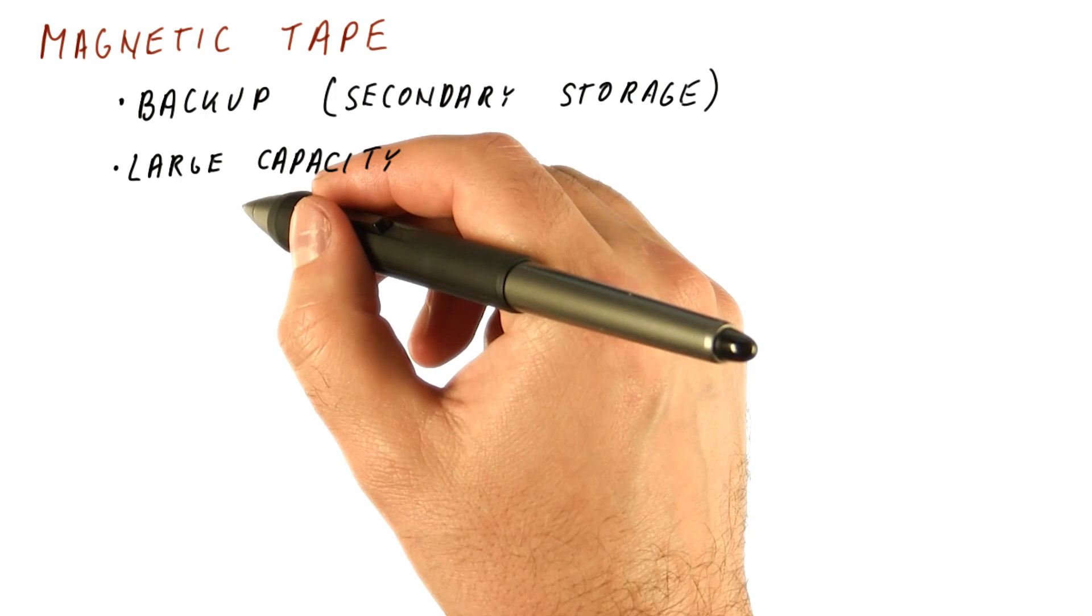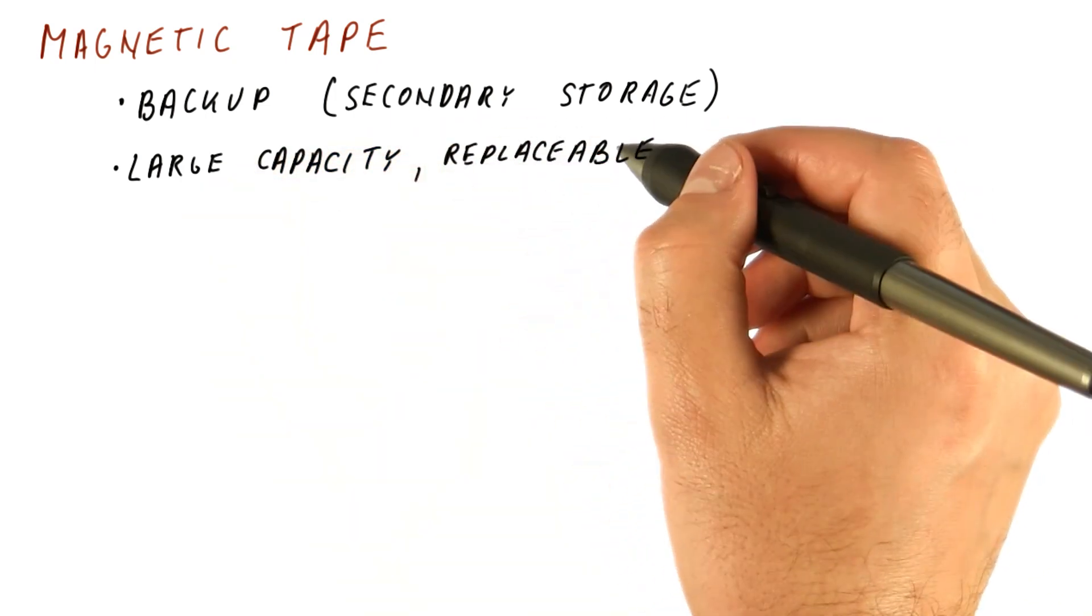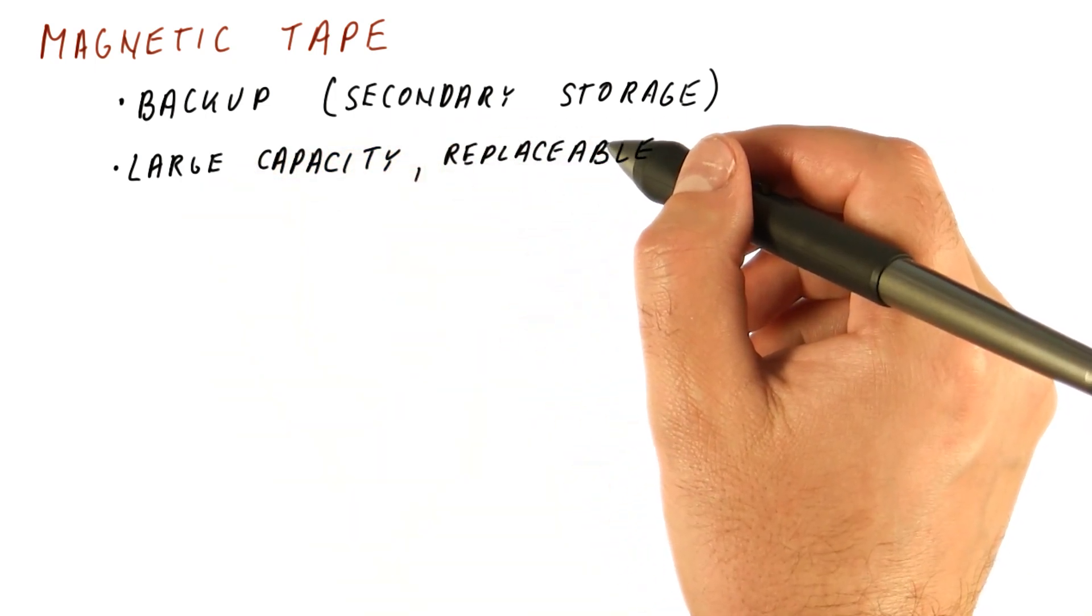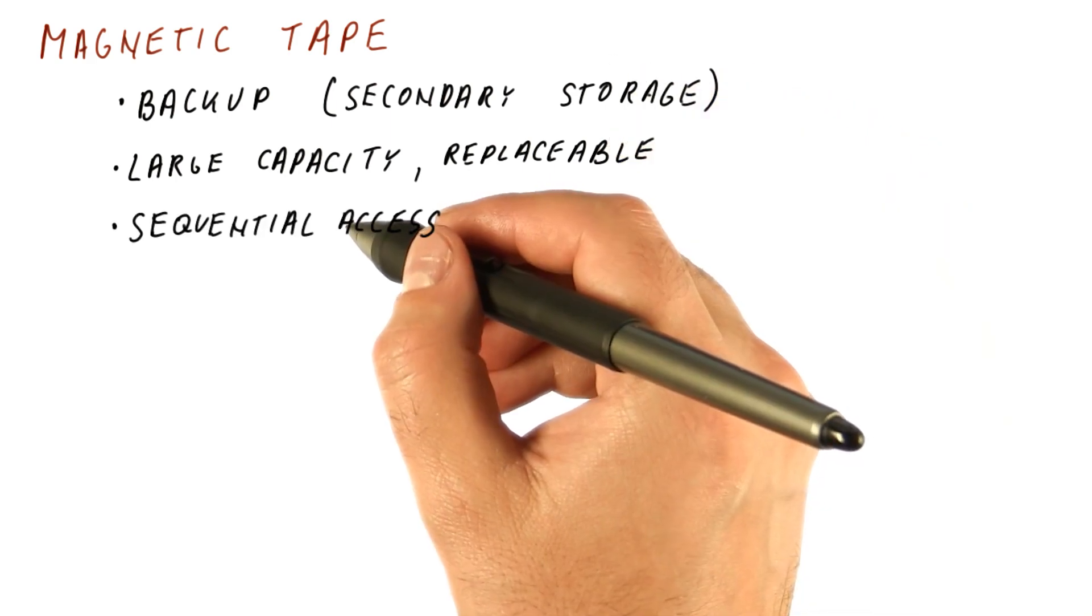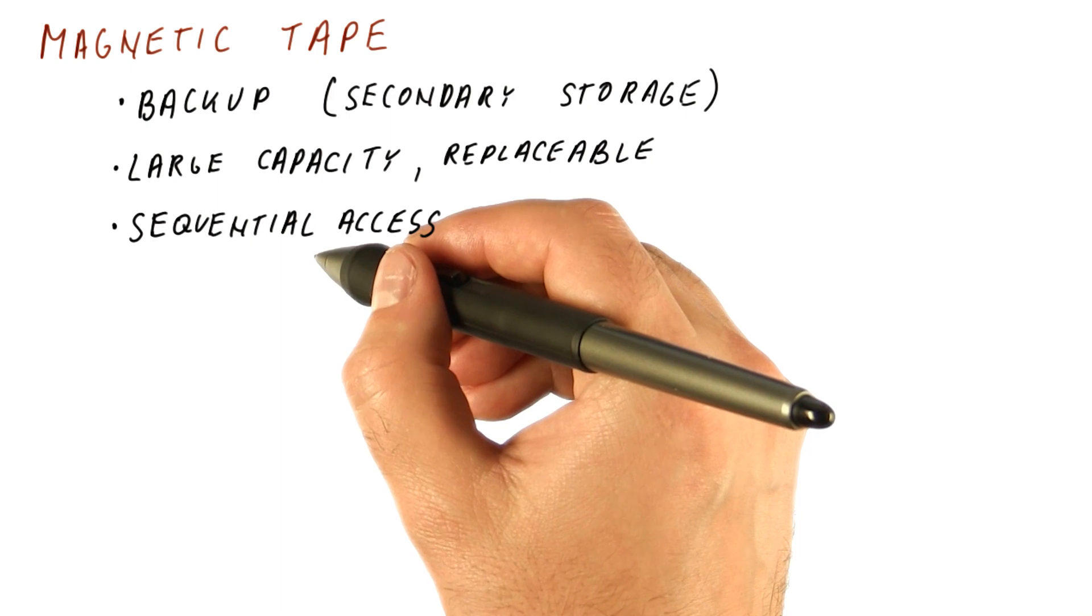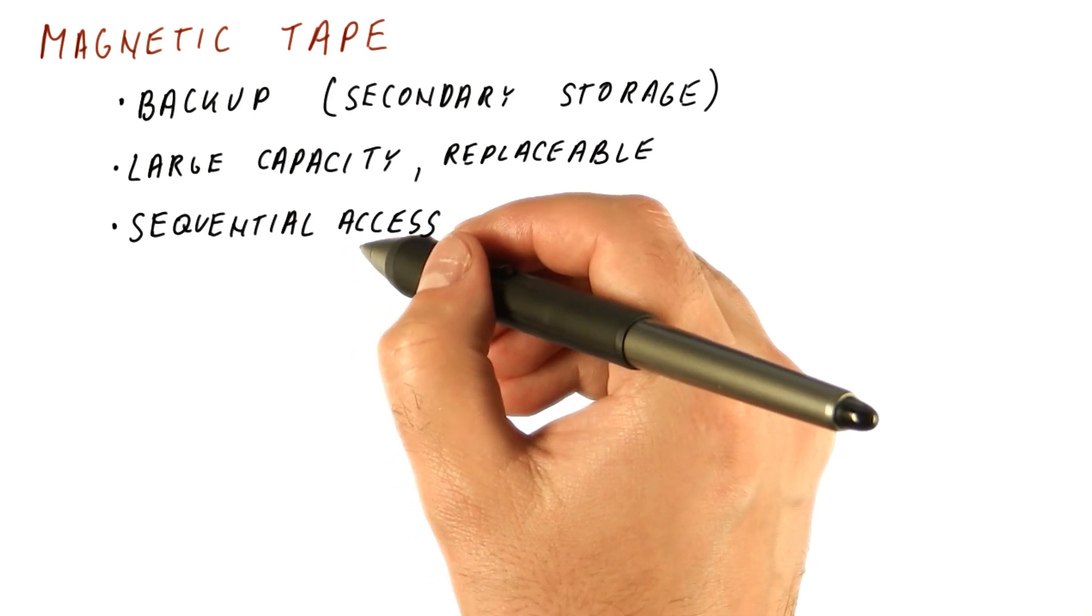Tapes can have large capacity and are usually replaceable, meaning you just bring a reel of tape and attach it to the tape machine. But their access is fundamentally sequential. We need to seek along the tape until we find the point we are interested in.